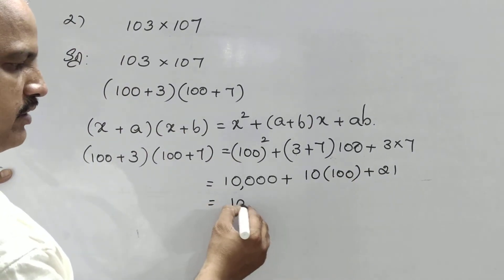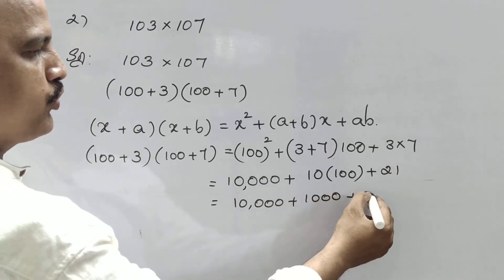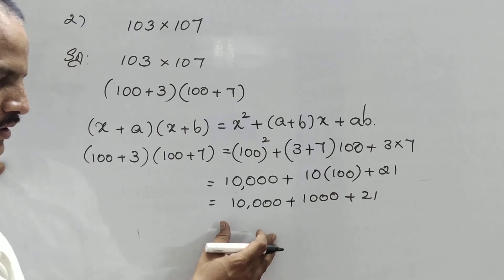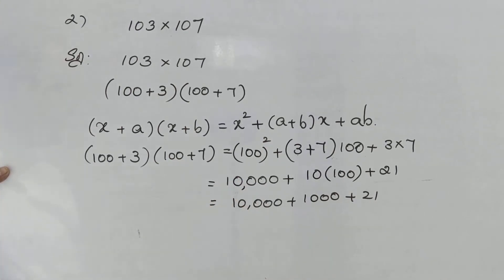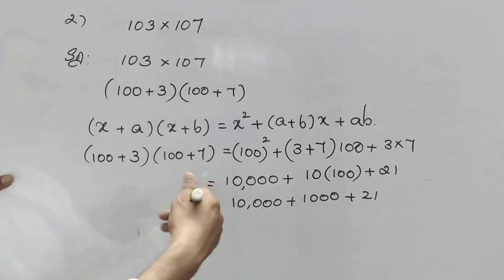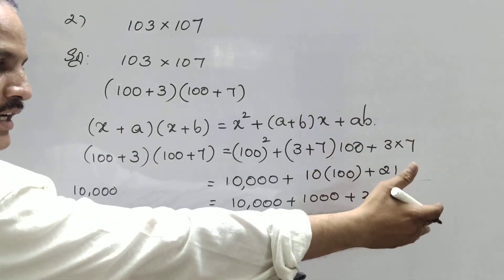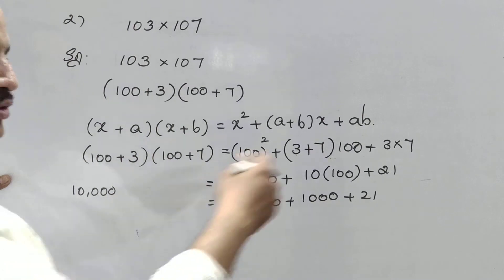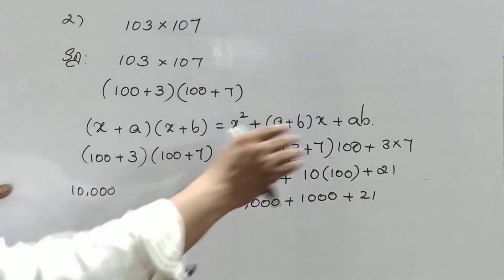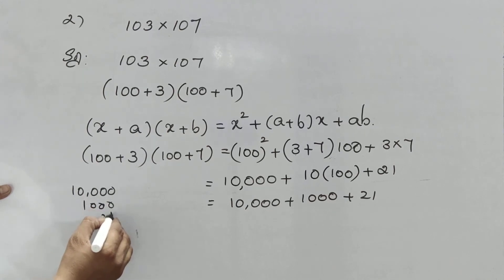You have to take utmost care while doing addition. You can go for rough work on the right-hand side. I'll tell you both ways. Do the rough work on the right-hand side — if I do it here, I'll hide the question. So: 10,000 plus 10,000 plus 21.